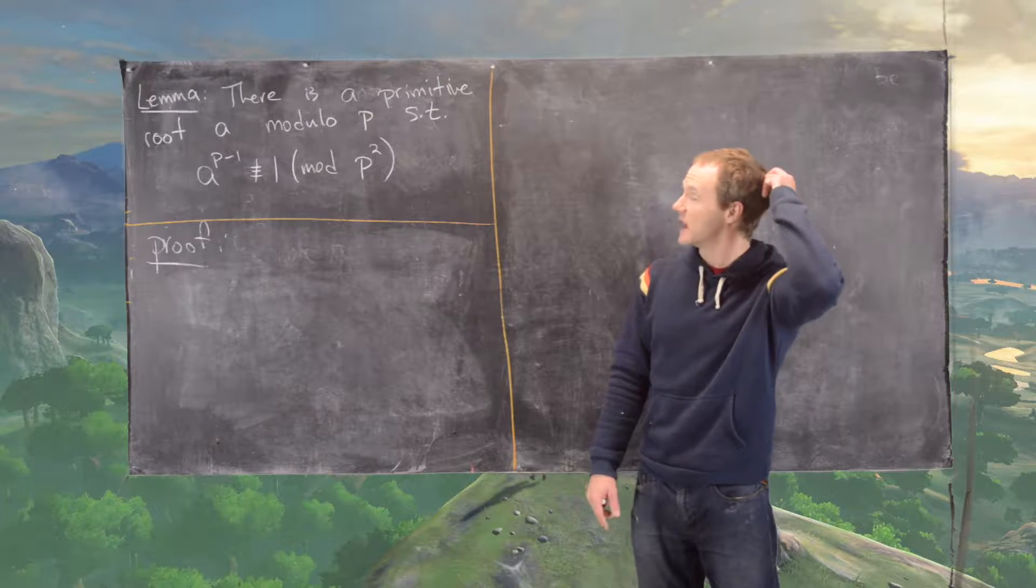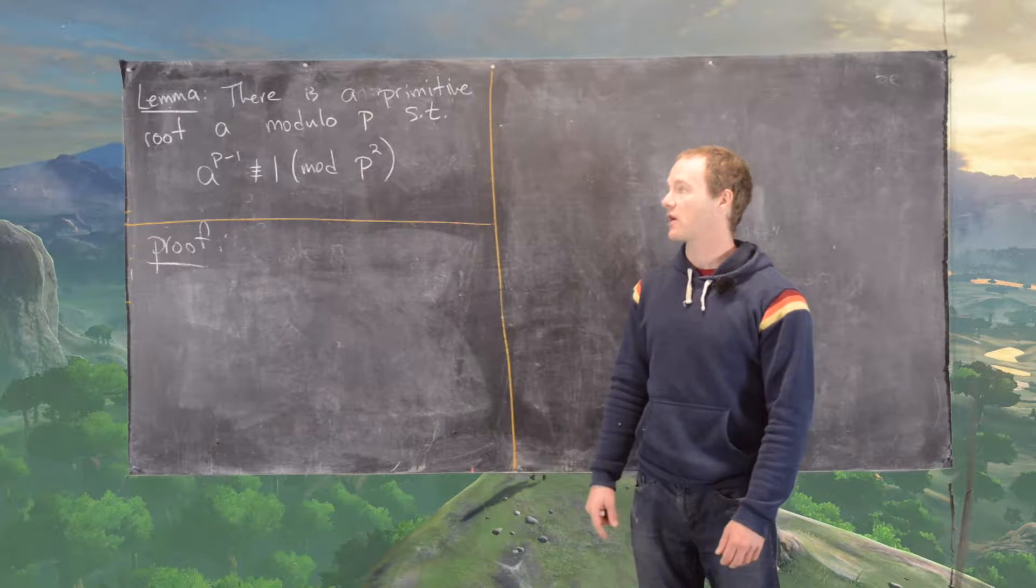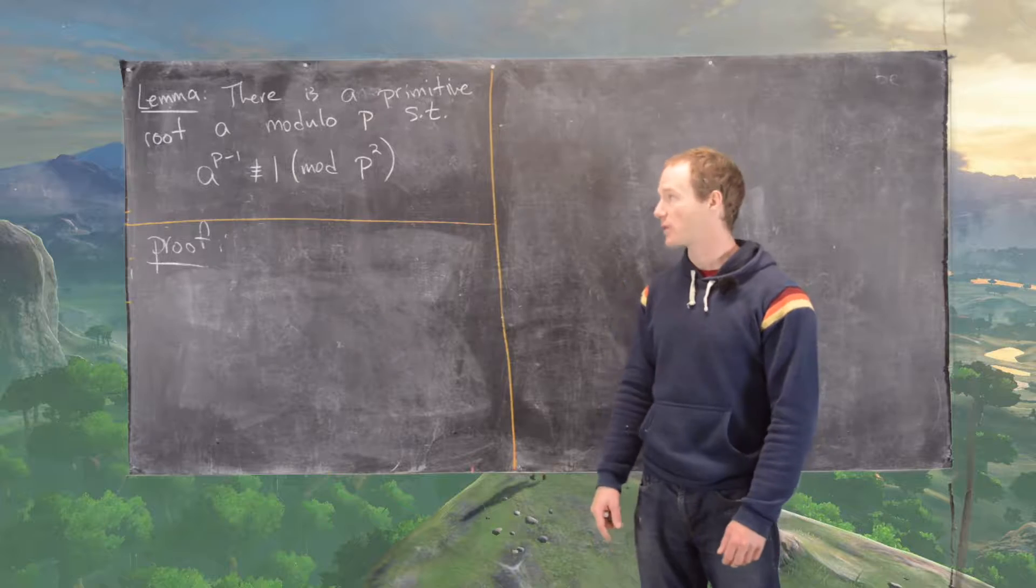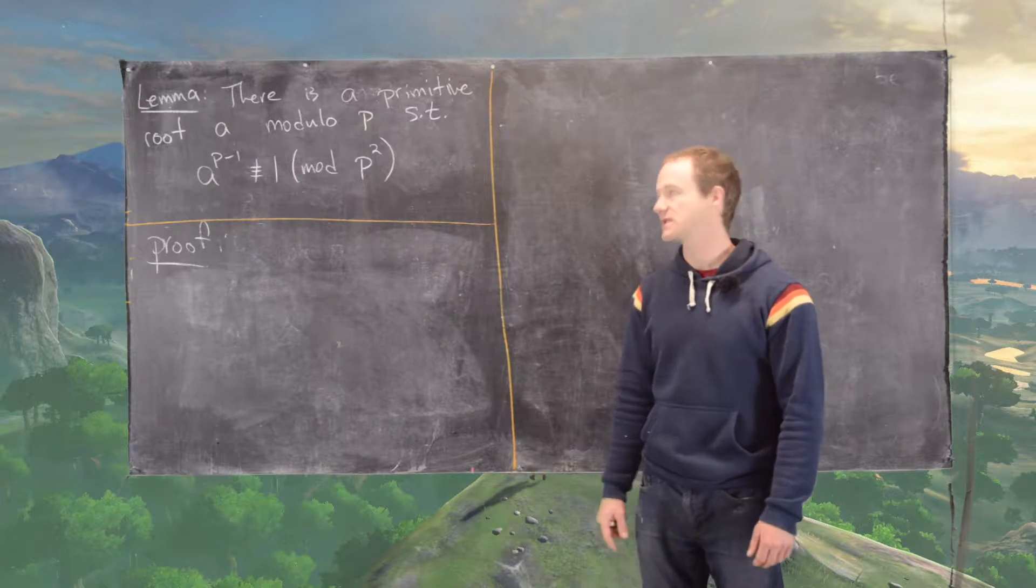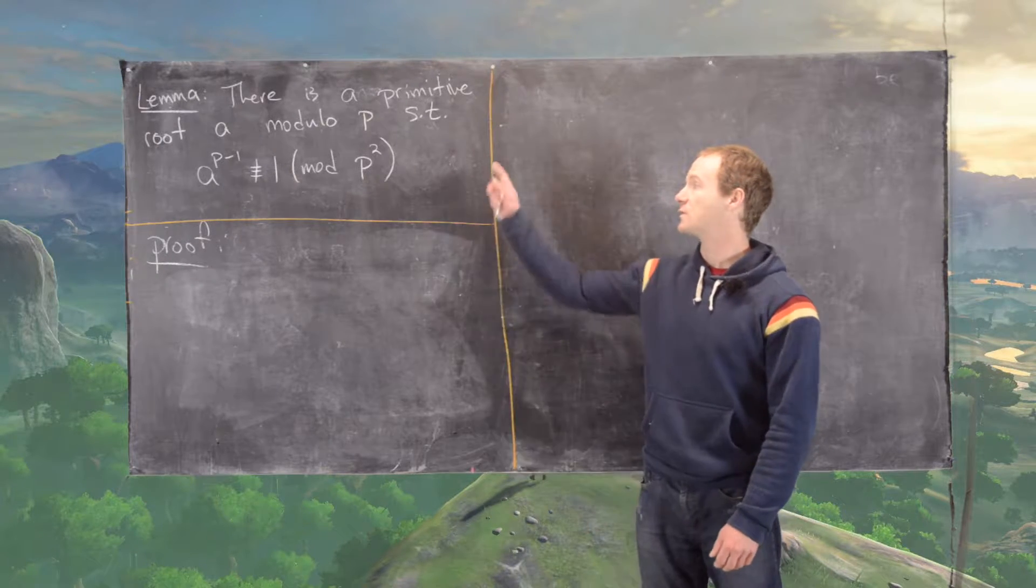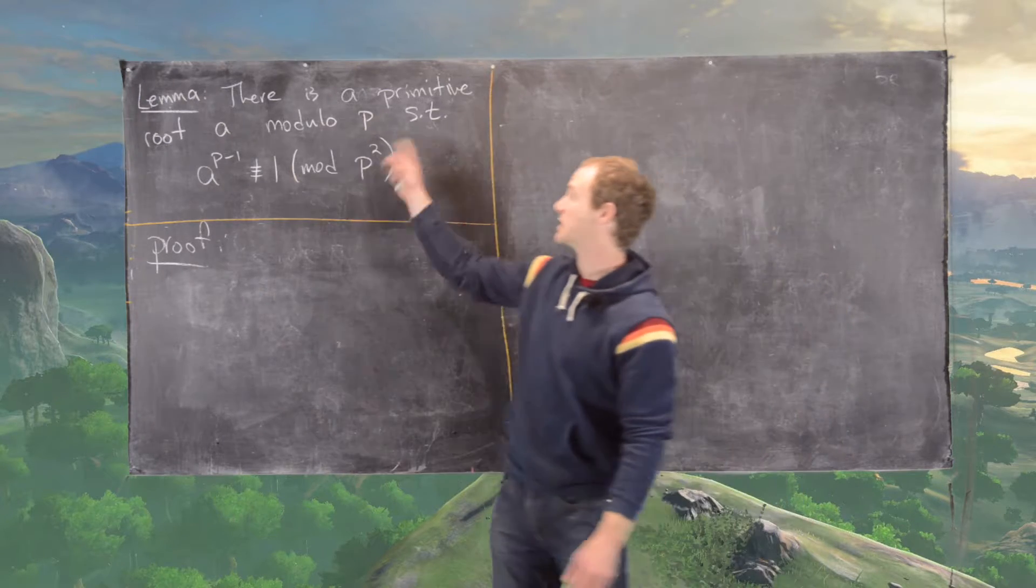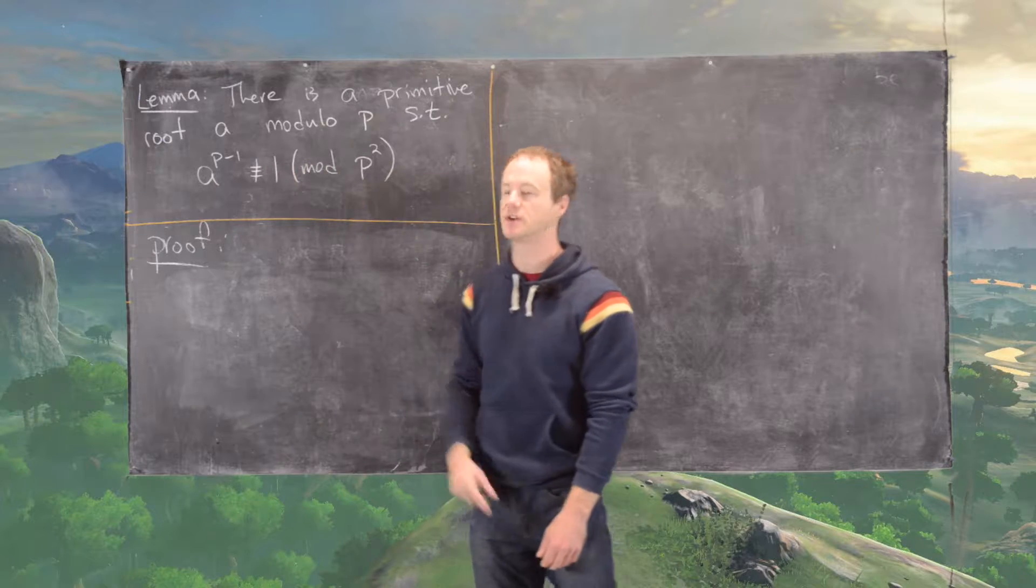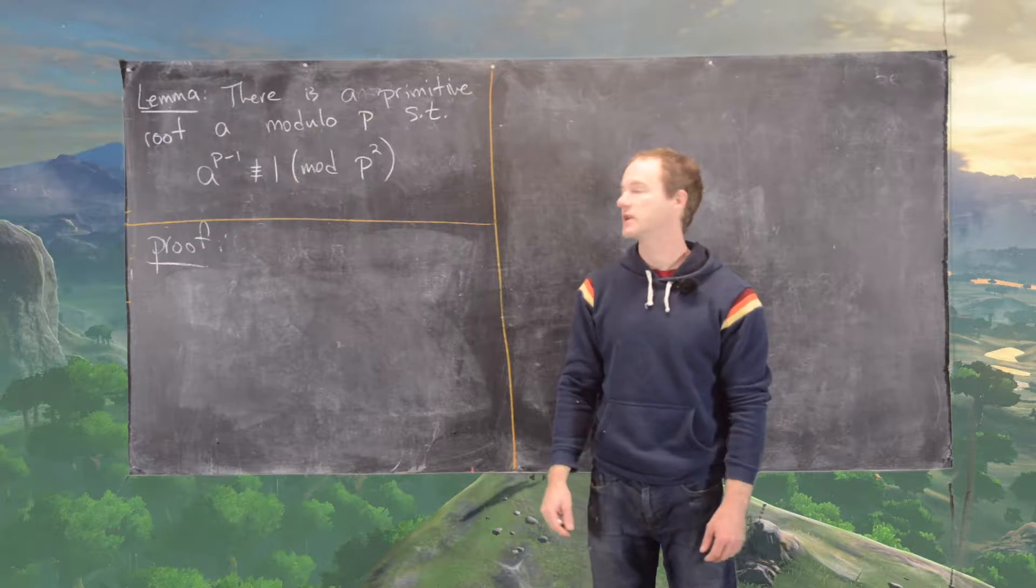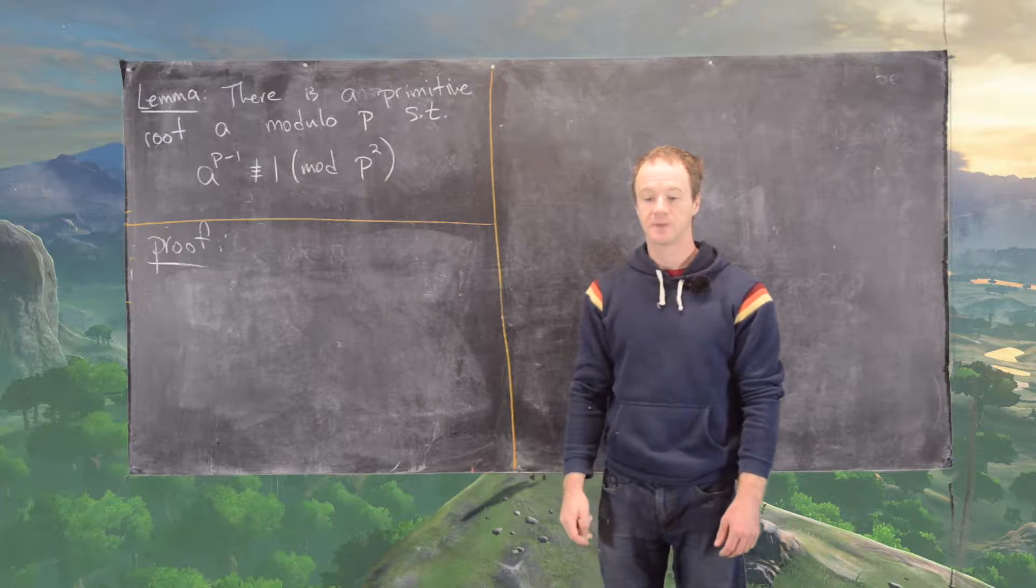Notice that from a previous result we have that there is a primitive root modulo any prime, and so we're using that implicitly in here. And then we're showing that this primitive root modulo p, if you take it to its p minus one power, which is phi of p, you don't get one modulo p squared.